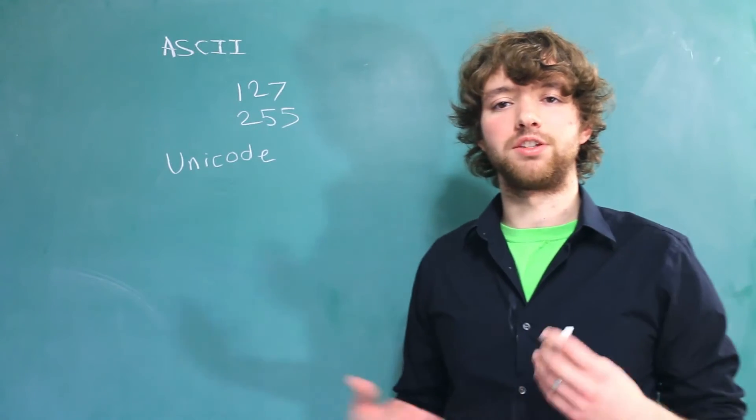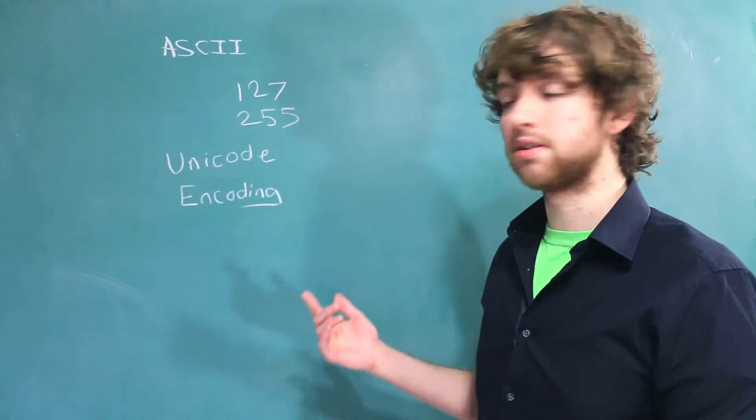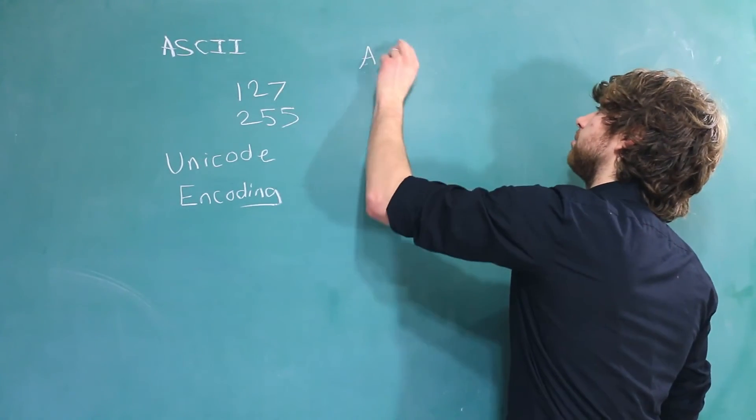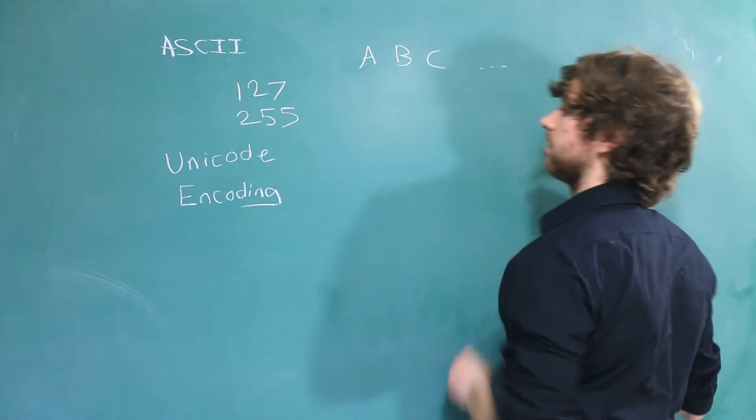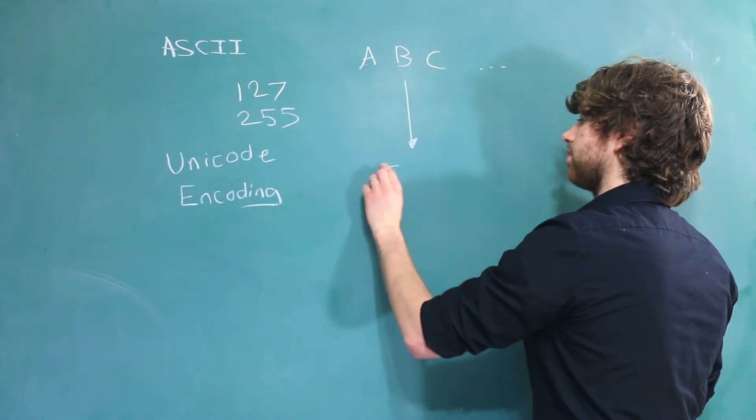When you start studying character sets, you will run across the word encoding. This is slightly different than character sets. Character sets are the characters that are allowed - you might be allowed A, B, C, and so on - but the way this is actually stored and implemented on the computer is known as the encoding.